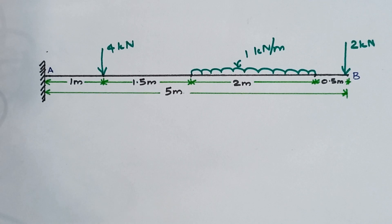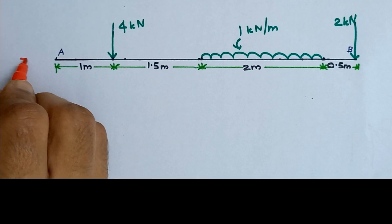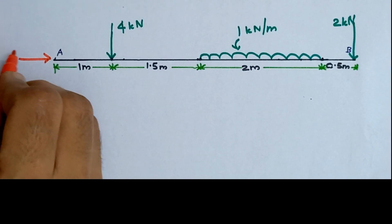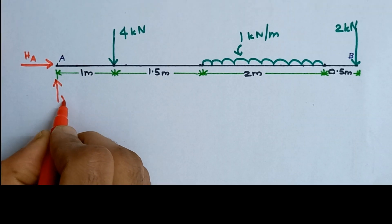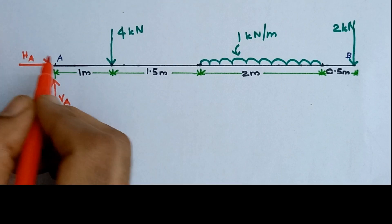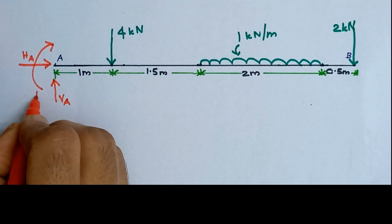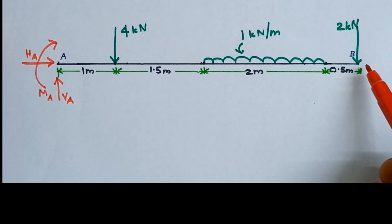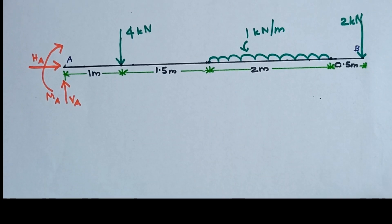Our first step is to draw the free body diagram. For this we have to replace the support with the corresponding reactions acting over the support. At end A we have a fixed support, and we know the fixed support restricts 3 types of movement. Since it restricts horizontal movement we have a horizontal reaction HA, vertical movement gives a vertical reaction VA, and since it restricts rotation we have a reaction moment MA. Since B is a free end we won't have any reaction there. So this is the free body diagram of the given beam.